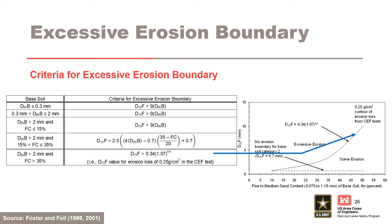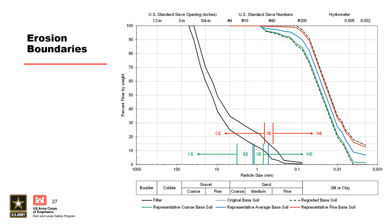Excessive erosion boundary. This slide presents the criteria for the excessive erosion boundary. The equation D15 of the filter ≈ 0.34 × 1.07^(percentage of core material, expressed as a percent) was obtained by the U.S. Army Corps of Engineers from a curve fit to the 0.25 grams per square centimeter line in the CEF test. After estimating all four erosion boundaries, plot them on the original filter gradation curves on the D15 line. If the filter gradation must be adjusted because segregation or washout is expected, then plot that adjusted curve as well.